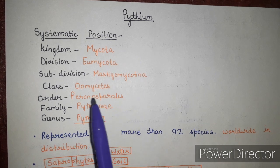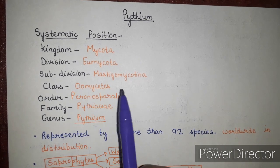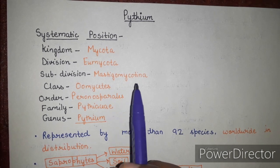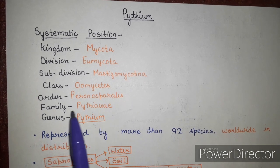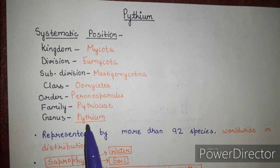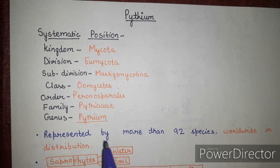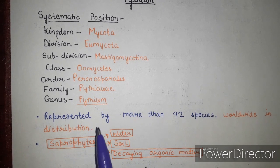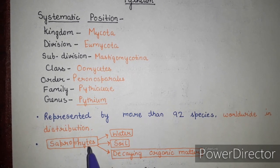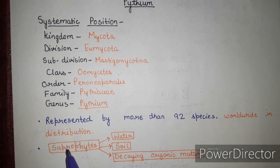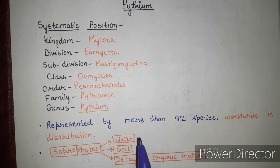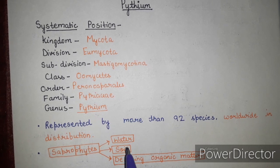In general classification, Pythium belongs to Kingdom Mycota, Class Oomycetes; its reproductive structures are anthridia and oogonia. Order is Peronosporales, Family is Pythiaceae, and Genus is Pythium. Pythium is represented by more than 92 species worldwide. Its species are mainly saprophytic in nature, meaning they grow on dead and decaying organisms.